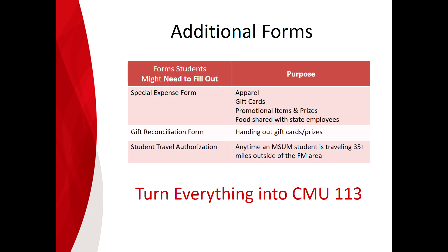Once in a while there might be additional forms required — take a moment and glance at the list. If you need any of these additional forms, they can be found in the same location as the student reimbursement form, or you can get copies at CMU 113. Once you have everything — your reimbursement request, any additional forms, and your receipts — staple all those pieces together and turn them in to us.